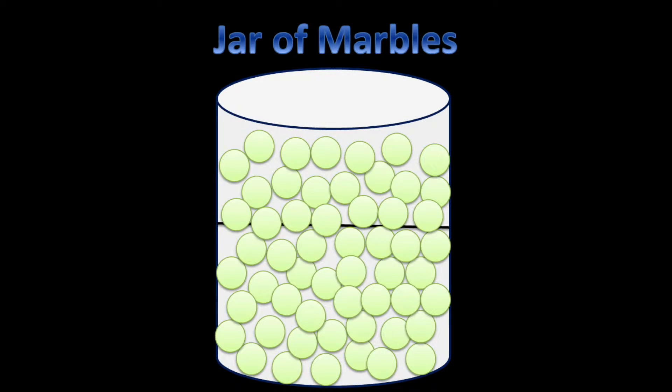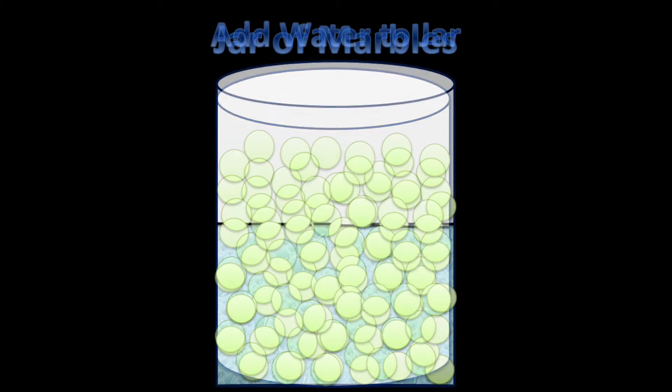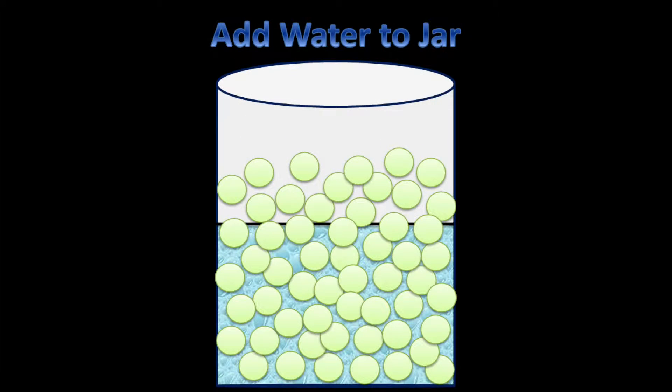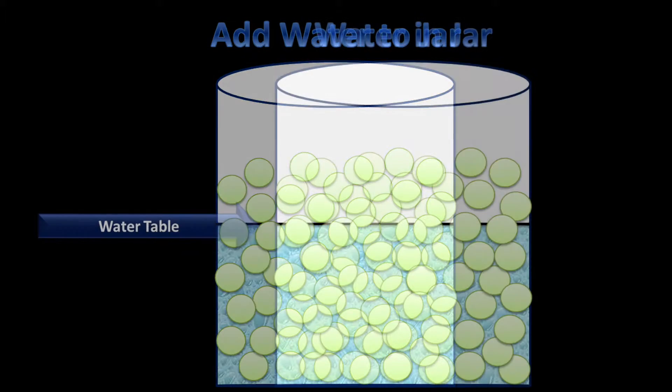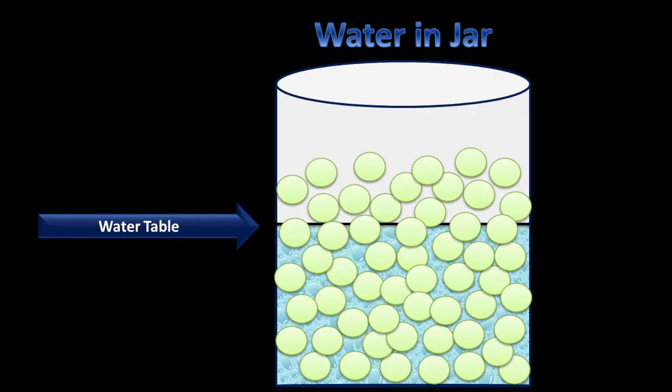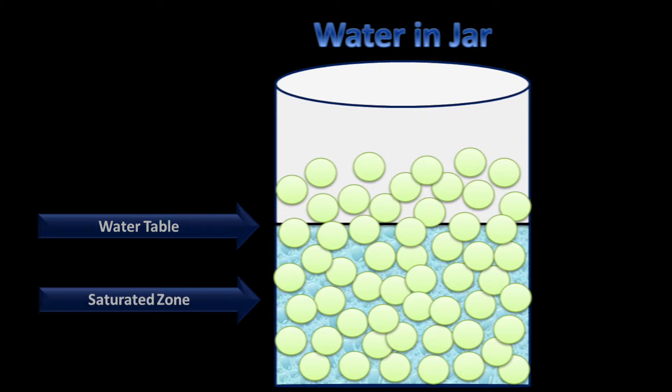Sure. Hydrogeology is basically how water flows through soil and rock under the ground. Think of soil as a jar of marbles. We can pour water into that jar of marbles. The spaces between the marbles are where the water is going to go. That level of the water we call the water table.